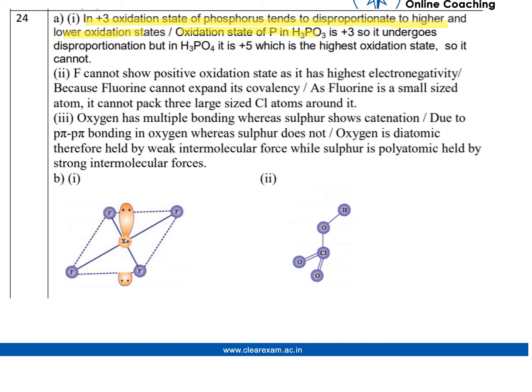But in H3PO4, it is +5 which is the highest oxidation state, so it cannot disproportionate. The second part of the question was: when Cl2 reacts with excess of F2, ClF3 is formed and not FCl3.